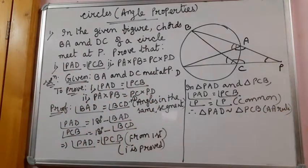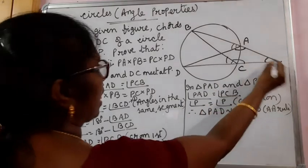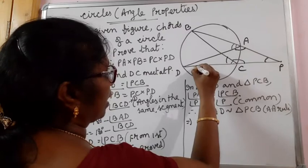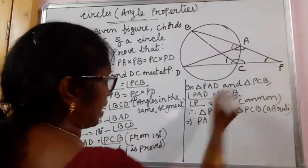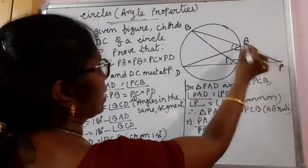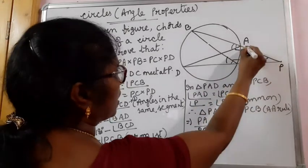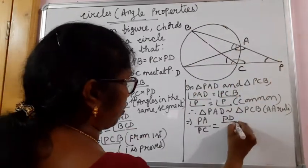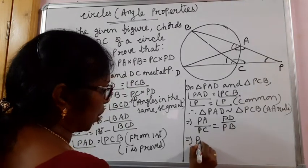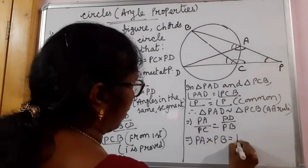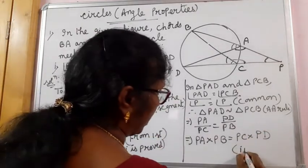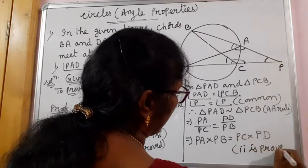Therefore, triangle PAD is similar to triangle PCB under the AA rule. Since the two triangles are similar, their sides are proportional. In triangle PAD, PA is opposite to angle PDA, and in triangle PCB the corresponding side is PC. Similarly, PD in triangle PAD corresponds to PB in triangle PCB. By cross multiplication, we get PA into PB is equal to PC into PD. That is our second bit proved.